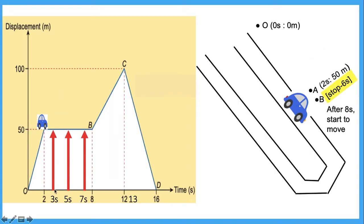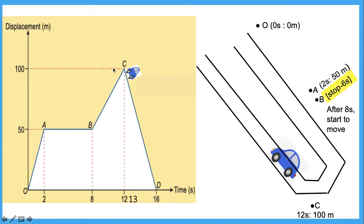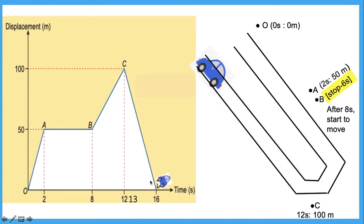This car starts to rest after 2 seconds until 8 seconds. And then, after 8 seconds, it will start to move again. When it reaches a displacement of 100 meters, this car turns back. Therefore, the displacement value decreases. And when it arrives at point D, the displacement becomes 0, which means this car is back to its original place.